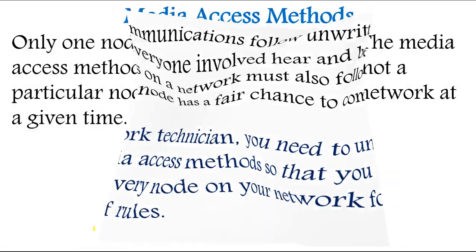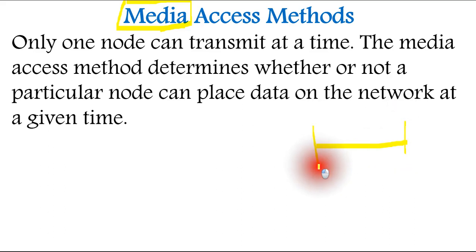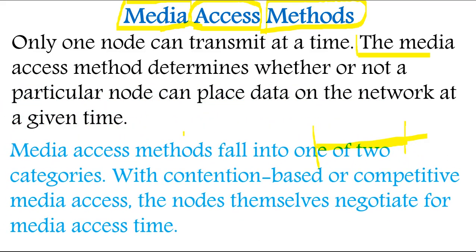Media access method is a combination of three words: media, which is the means by which data travels — like a wire or cable; access, meaning taking permission; and method, meaning how they are accessing. Only one node can transmit at a time. The media access method determines whether or not a particular node can place data on the network at a given time. Media access methods fall into one of two categories.